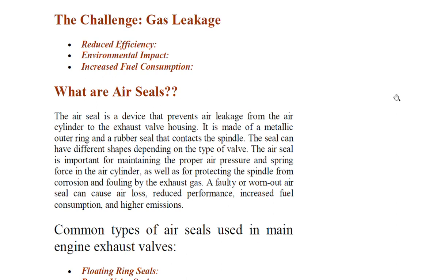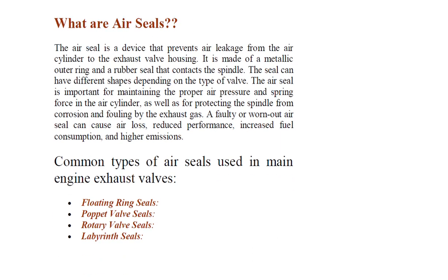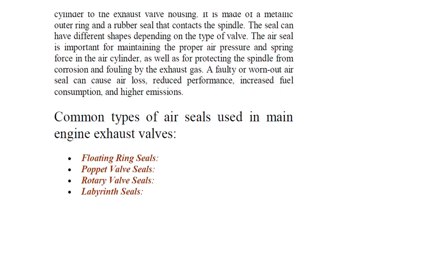To address the issue of gas leakage, engineers have developed various types of air seals, each with its own unique characteristics and applications. The common types of air seals used in main engine exhaust valves are: floating ring seals, poppet valve seals, rotary valve seals, and labyrinth seals. Labyrinth is a very common term in shipping, so you must be aware of this.